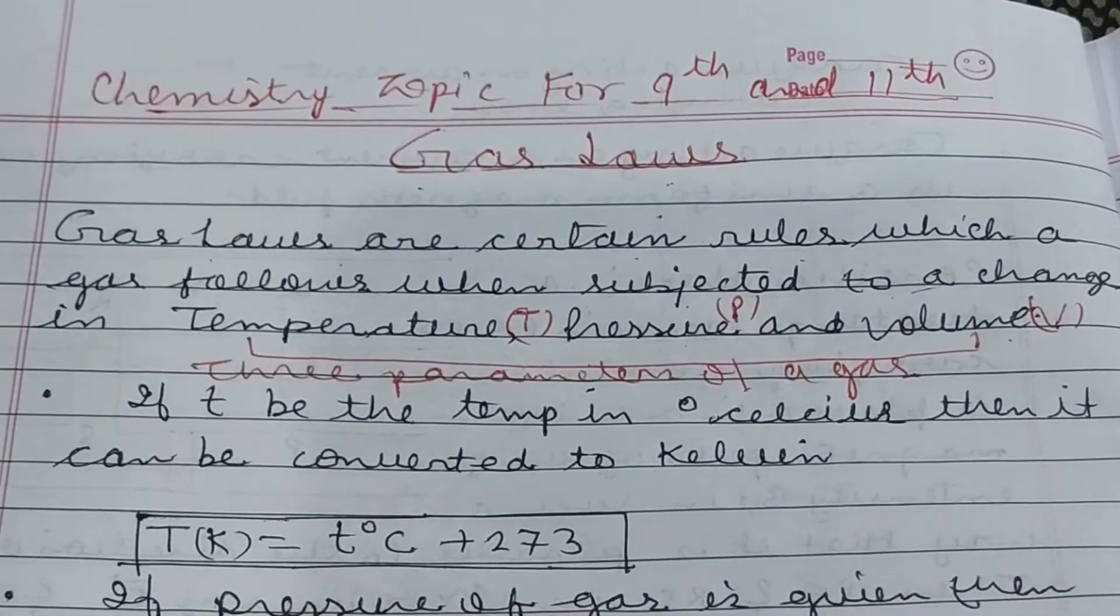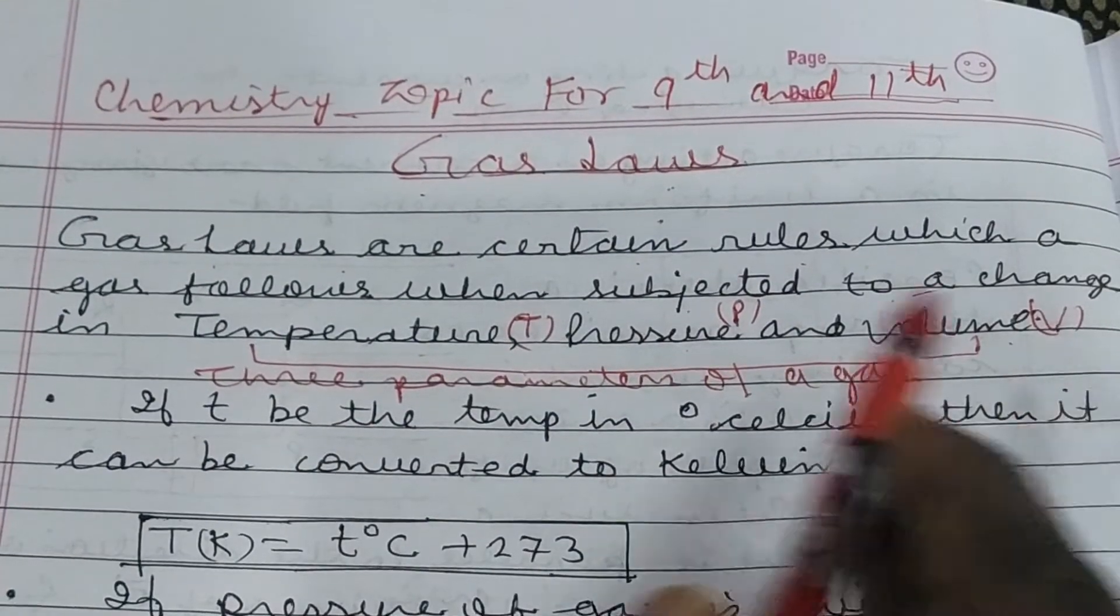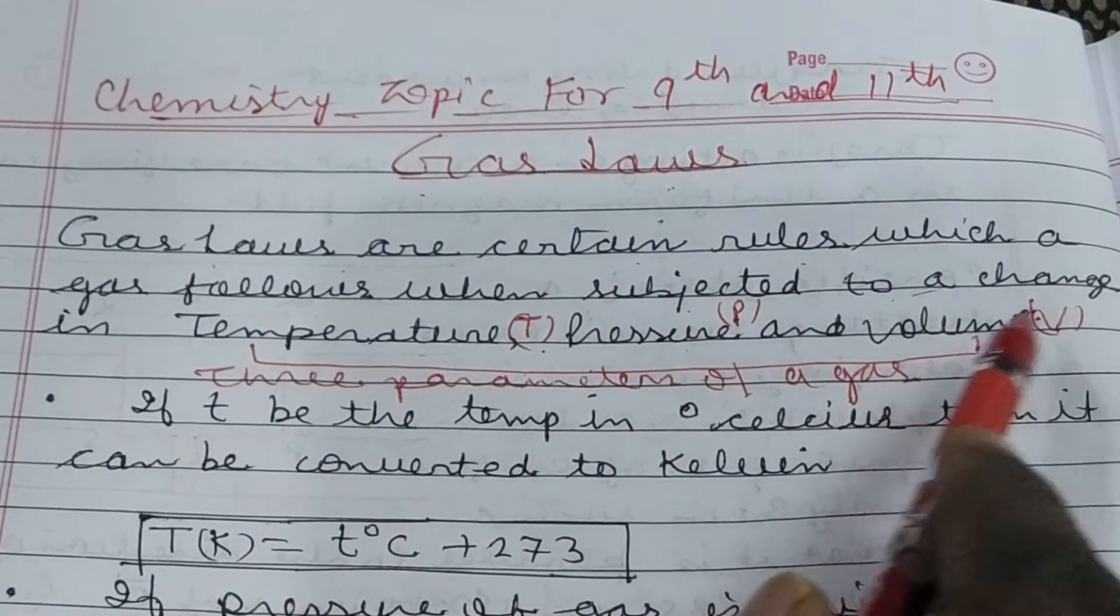To express gas, you need these three terms: Temperature T, pressure P and volume V.